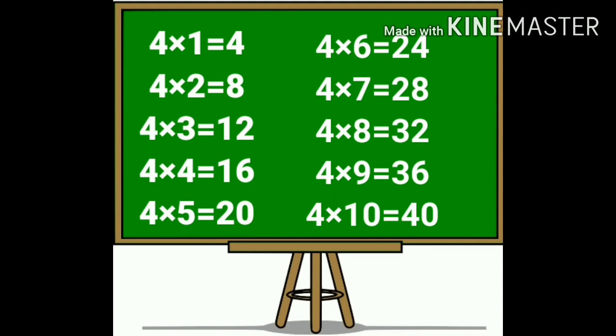Again: four ones are four. Four twos are eight. Four threes are twelve. Four fours are sixteen. Four fives are twenty. Four sixes are twenty-four. Four sevens are twenty-eight. Four eights are thirty-two. Four nines are thirty-six. Four tens are forty.